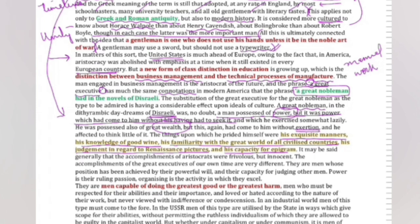The thing upon which he prided himself were his exquisite manners, his knowledge of good wine, his familiarity with the great work of all civilized countries, his judgment in regard to renaissance pictures and his capacity for epigram. Cultured ہونے سے مراد یہ ہے کہ آپ کو well-mannered ہونا چاہیے، آپ کو wine کا پتہ ہونا چاہیے، آپ کے پاس world history کا knowledge ہونا چاہیے، renaissance کی جو pictures ہیں art جو ہے آپ اس کو appreciate کر سکتے ہو۔ It may be said generally that the accomplishments of aristocrats were frivolous but innocent.